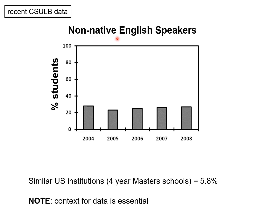This shows the percent of students that are non-native English speakers at similar institutions in the U.S. Now we have context: 5.8 percent. So if we know that the values of around 20 percent — very similar to the ones in the previous slide — compare to about six percent at other schools, we can see that Long Beach has three to four times as many non-native English speakers as similar universities. That puts these very similar numbers in a whole different light.